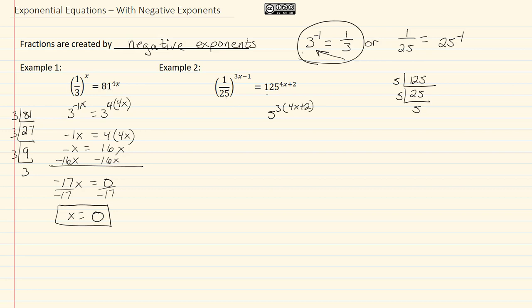Then we have twenty-five. Just looking at this part, I can see that twenty-five is five squared. So I've got one over five squared, all raised to the three x minus one. Now we're going to make use of this property. We're going to move that five squared up top, so we have five to the negative two times three x minus one equal to five to the third power times four x plus two. Now that I have the same base, I can solve for my variable.